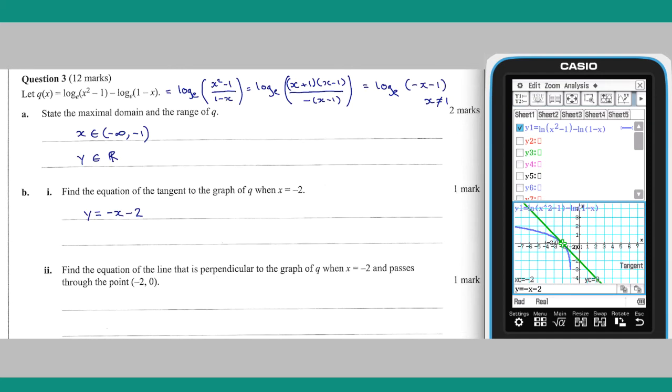Part B, part 2. The line referred to in this part is the normal to the graph through the point minus 2 comma 0, the point of tangency from part 1. The equation of this line can be found in a similar way, tapping analysis and then sketch, and this time choosing normal.